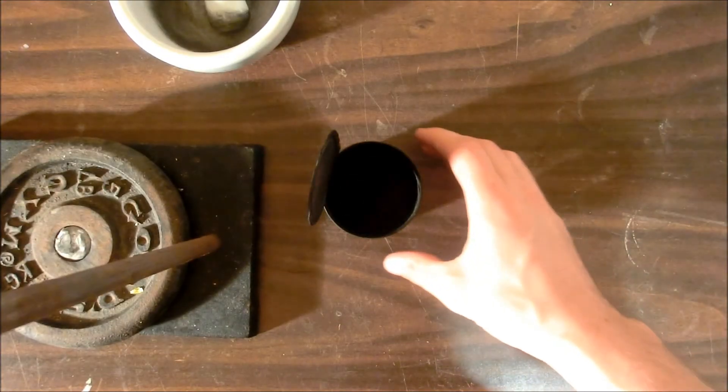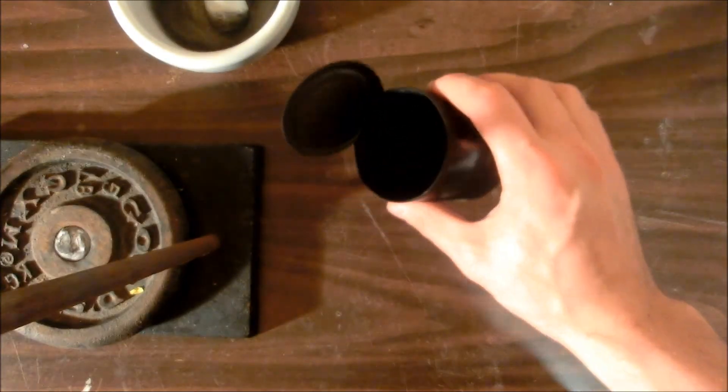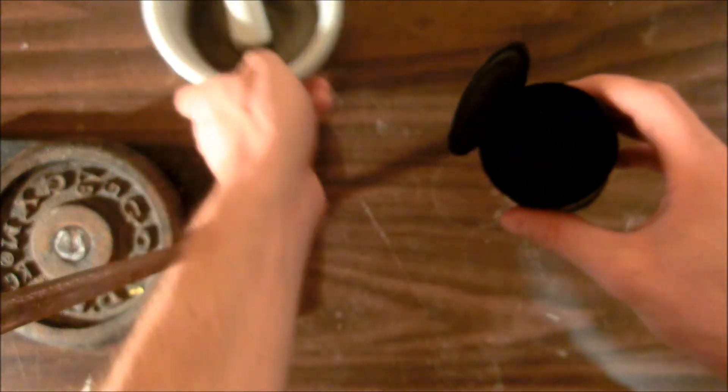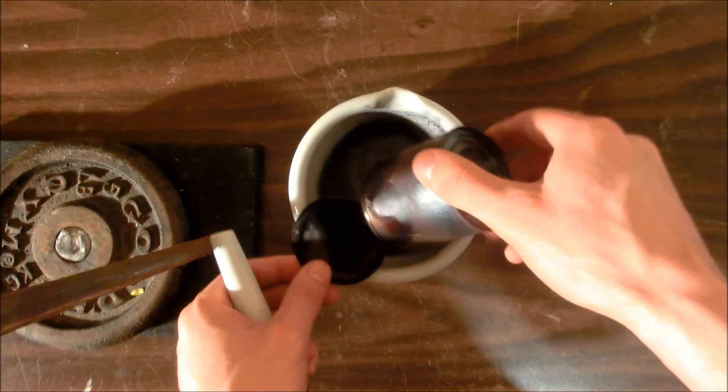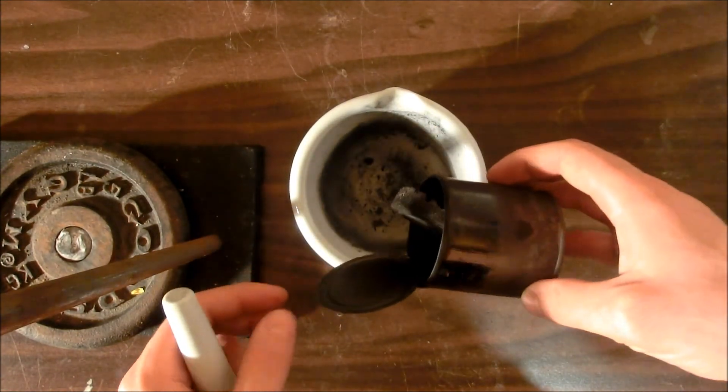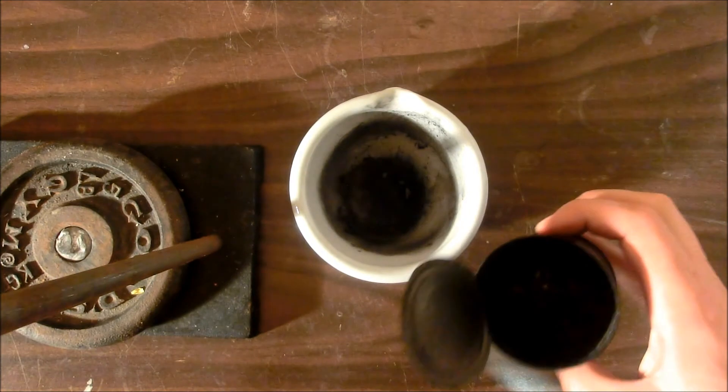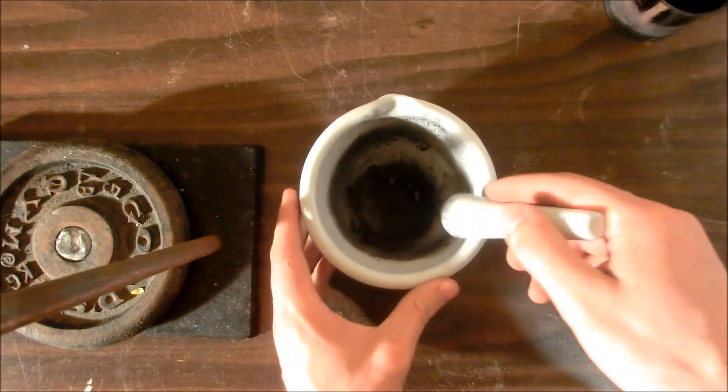After the can is cooled, you should have a nice solid cake at the bottom of the can. Dump it out into the mortar and pestle and crush it up, and our iron sulfide will be ready to be used in our hydrogen sulfide generator.